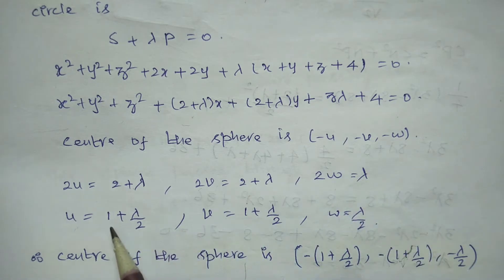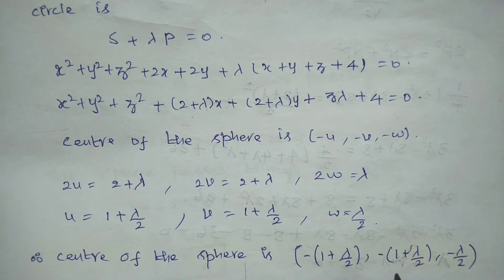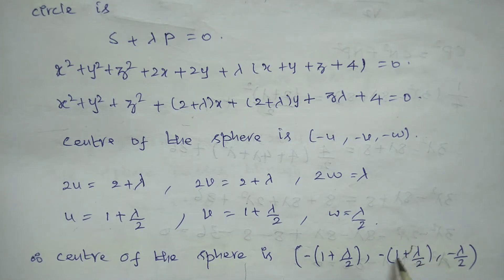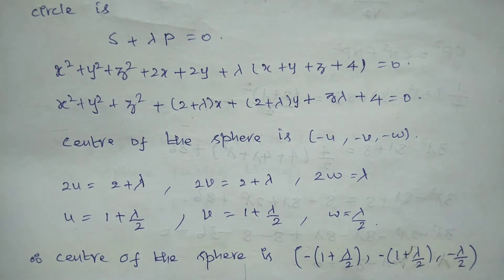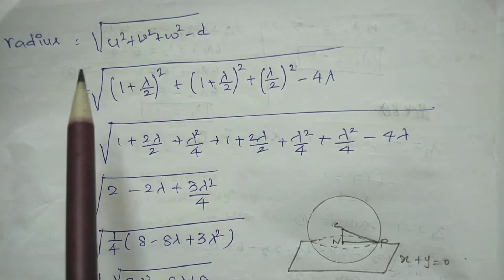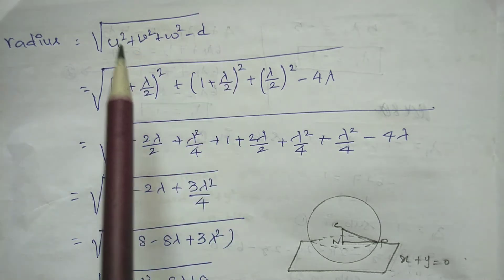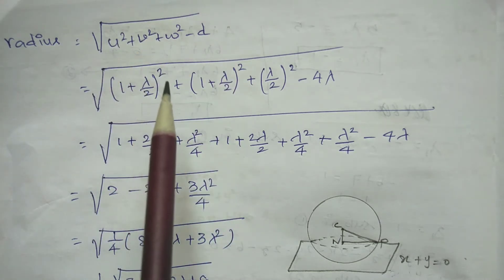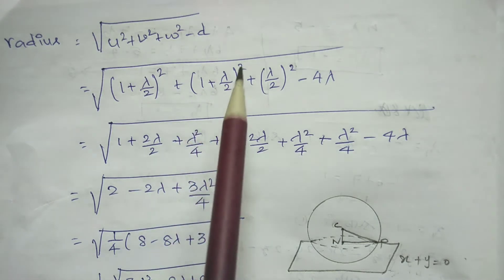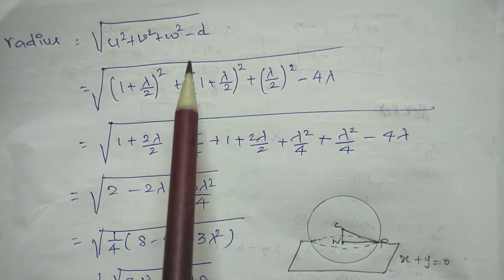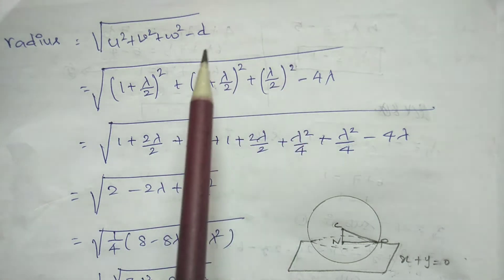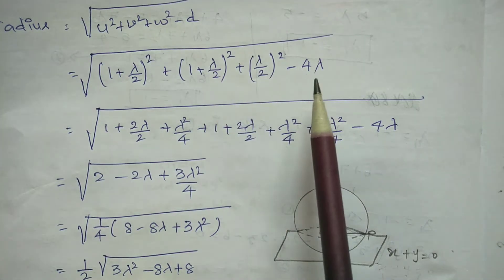Substituting into the center formula: center = (−(1+λ)/2, −(1+λ)/2, −λ/2). Now for the radius formula: R = √(u² + v² + w² − d). So u² = ((1+λ)/2)², v² = ((1+λ)/2)², and w² = (λ/2)². The constant d value is equal to 4λ, so we apply minus of −4λ.